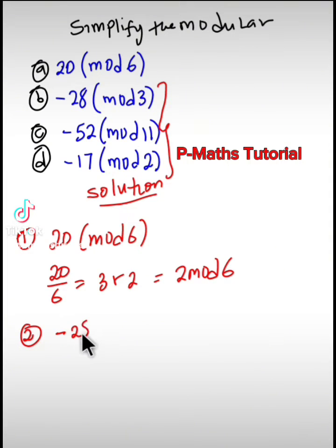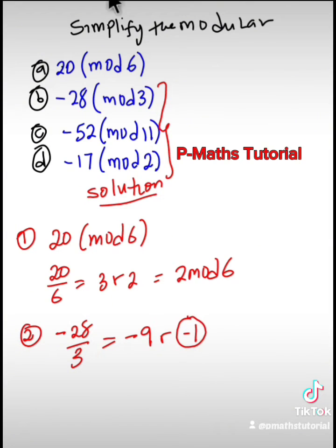I have minus 28 divided by 3 by dividing by the mode. Now if 3 divide 28 we have negative 9, remainder, negative 1.